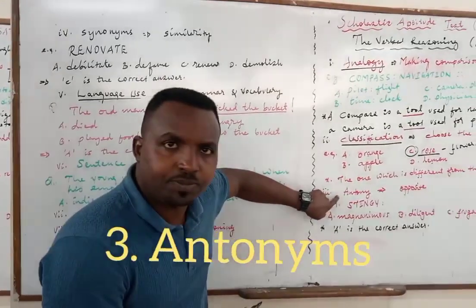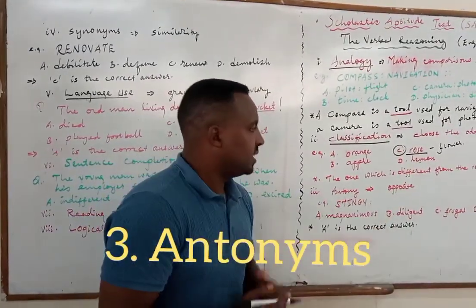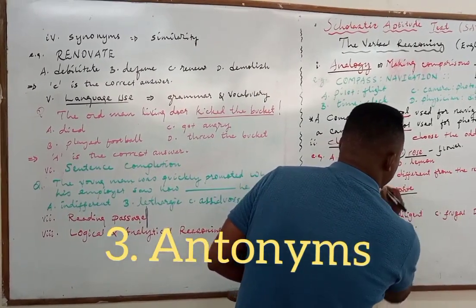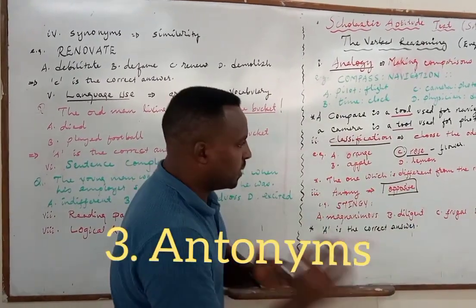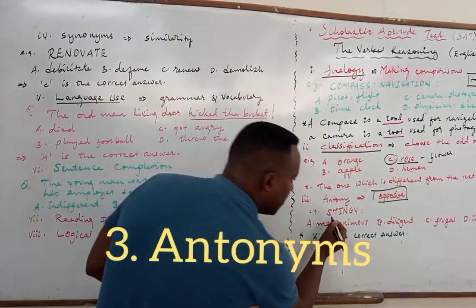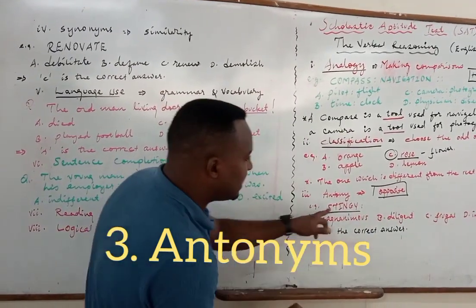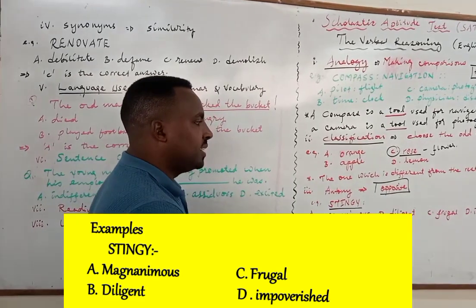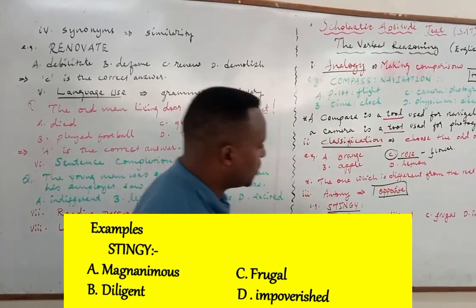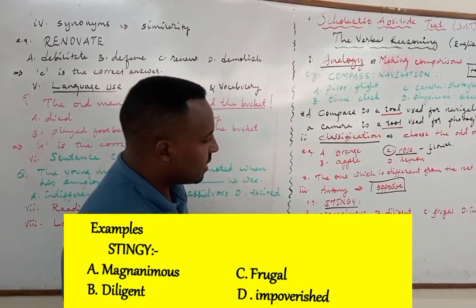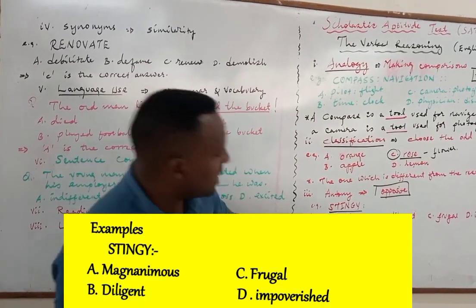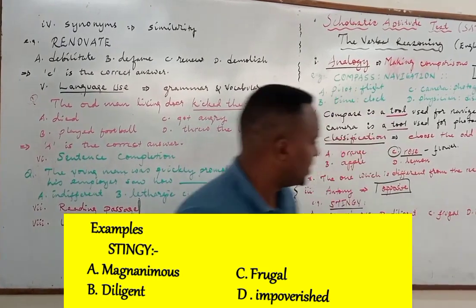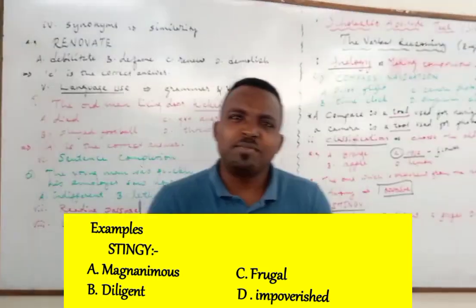The next one is antonym — one of the easiest. Antonym refers to opposite words. You'll be given a word in block letters like this: STINGY. You are expected to find the option which is opposite to stingy. Here we've got four options: magnanimous, diligent, frugal, impoverished. Stingy means miserly.